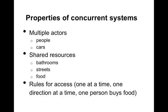So what do we learn from this? There are key properties of concurrent systems. First, there are multiple actors who can do things — people using a bathroom, roommates, or cars at an intersection. Second, there are shared resources: the bathroom, food, and the street. Third, we need rules for sharing those resources safely — one person at a time in the bathroom, one person buys food, or only one traffic direction goes at once.